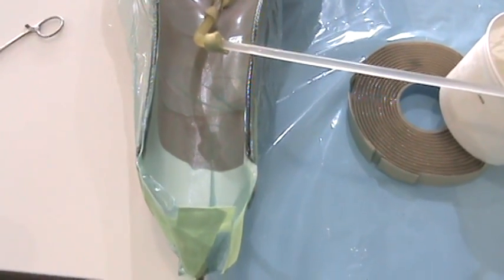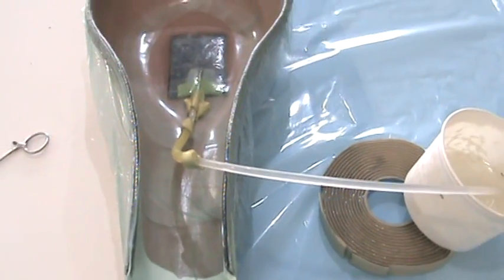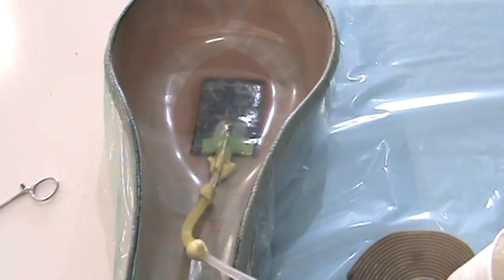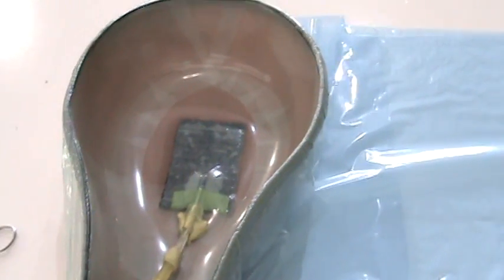And then we'll clamp everything off and pull our vacuum back down. It's actually interesting, the bag where the resin is introduced will kind of come loose a little bit because you've pulled resin there. But once you clamp it off.